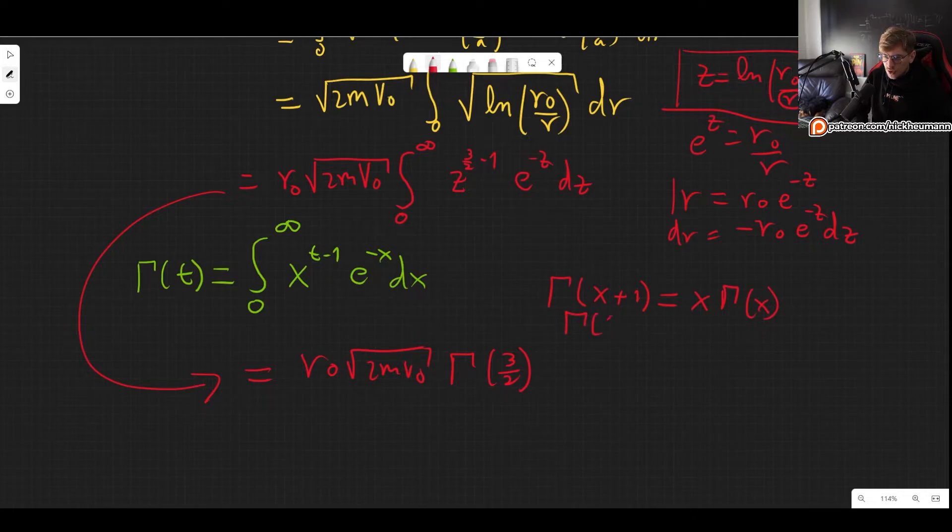But the gamma function of one half is the square root of pi. So that means that we get the square root of pi over two. That is a well-known result and it is very very helpful that you know it. So now we found the solution to the integral. That's why the gamma function is so important because you can't really solve this integral in any easy way.